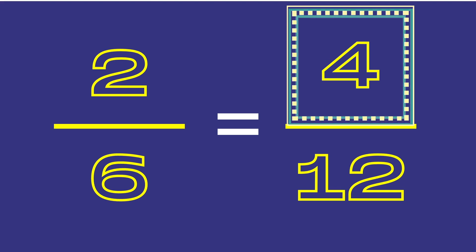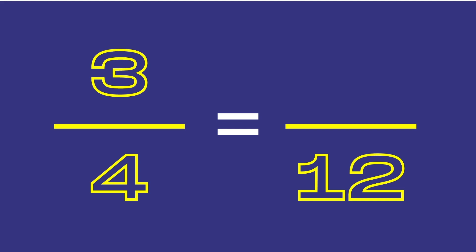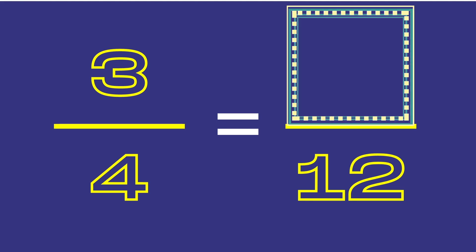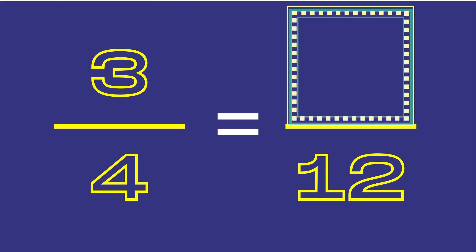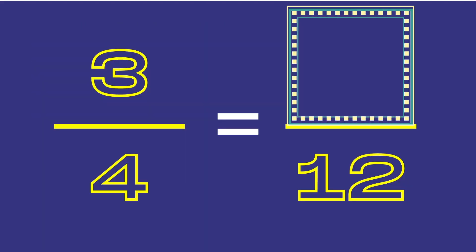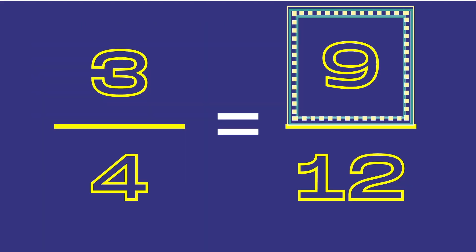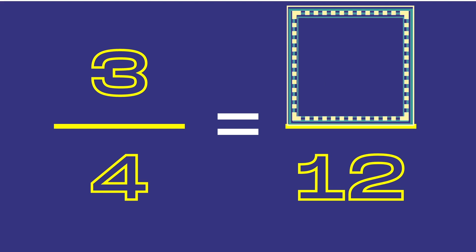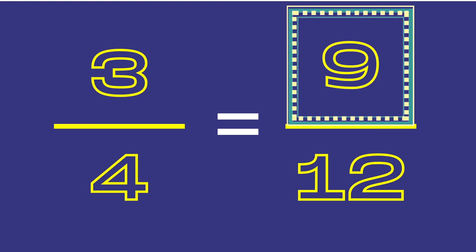Now for the final bonus question. Name that missing numerator. It's 9! Is it 9? It is 9. The correct answer is 9. 4 times 3 is 12, and 3 times 3 is 9. 3 fourths and 9 twelfths are equivalent fractions.